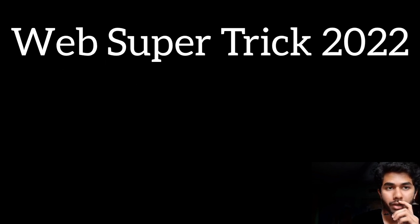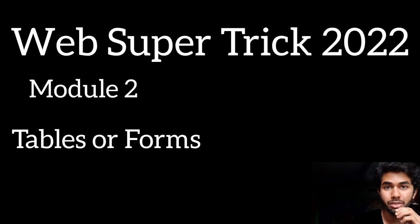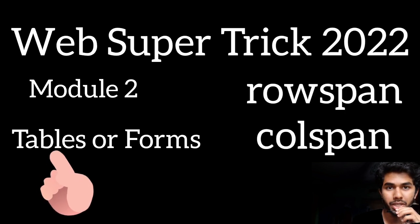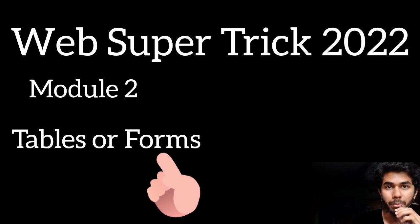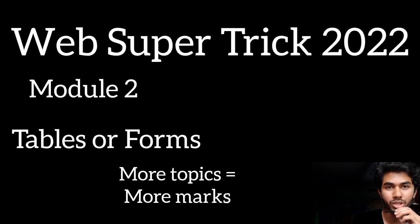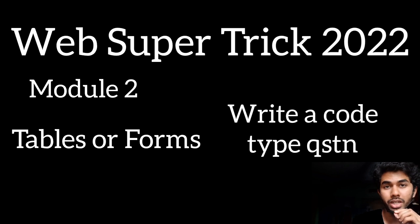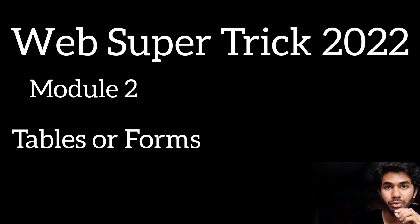In Module 2, you have tables and forms. Tables is a shorter topic — just rowspan and colspan — while forms is a longer topic with more probability of fetching marks. In both topics, coding-type questions can also be asked: they'll give you an output and you have to write the code for it. So be prepared for both basic theory and code.